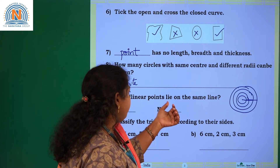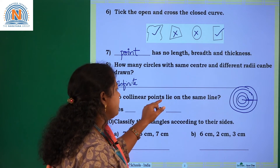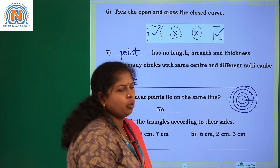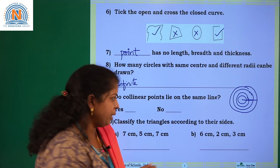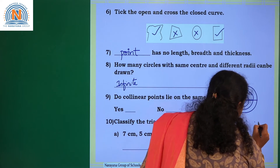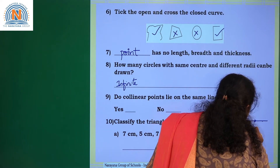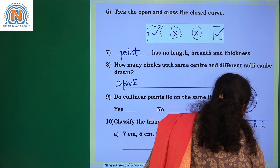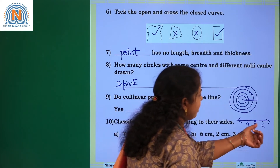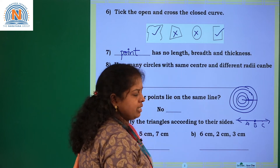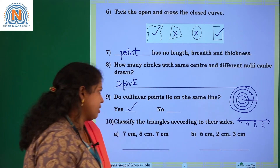Do collinear points lie on the same line? Collinear points means they are lying on the same line. If three points A, B, and C lie on the same line, then these three points are known as collinear points. Yes, they do lie on the same line.